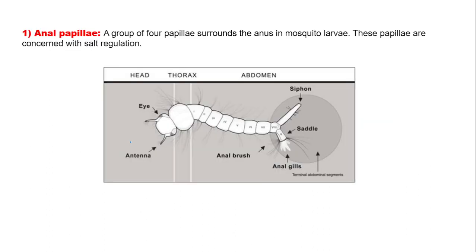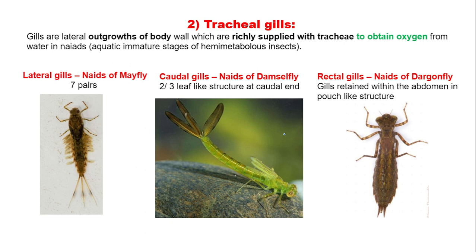Anal papillae: a group of four papillae surrounding the anus are present in mosquito larvae, and these anal papillae are concerned with salt regulation.